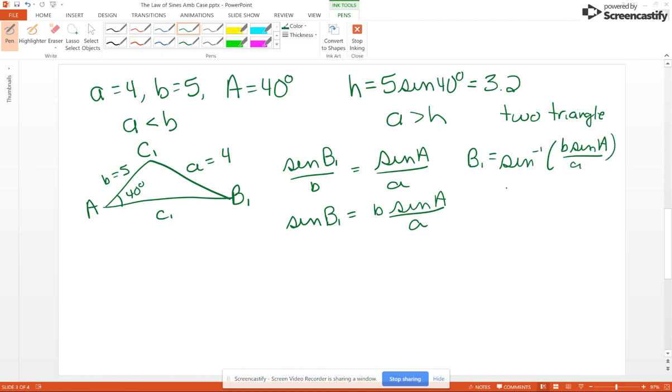Which is the inverse sine of 5 sine of 40 over 4, which rounding to the first decimal place is 53.5 degrees.